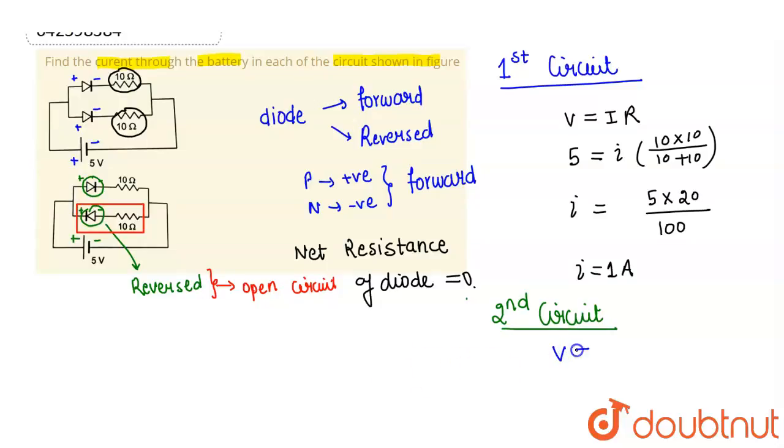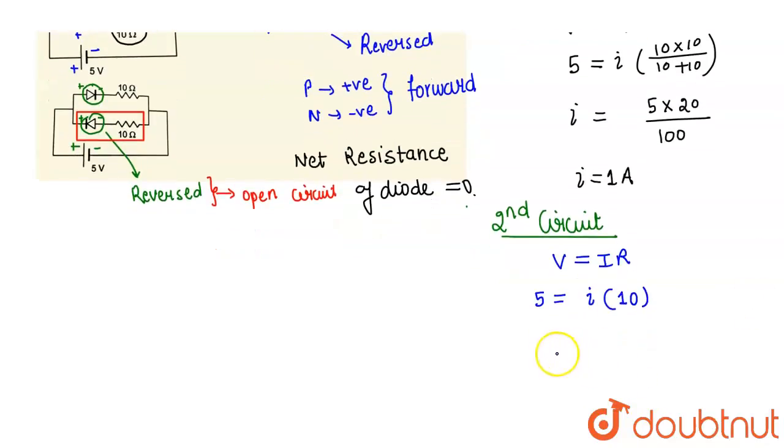And even this 10 ohm resistor is not of use, so the effective current will be given by V equals to IR. Here V is 5 volt, let current be I, and the resistor is only 10 ohm. So the current is 5 by 10, which equals 1 by 2 ampere. So in second case, current is 1 by 2 ampere, and in first case, it was 1 ampere.